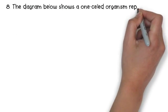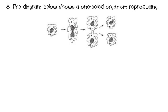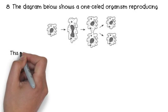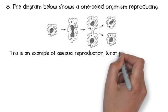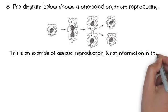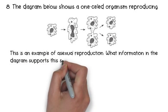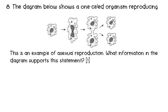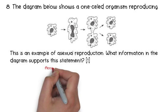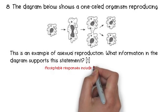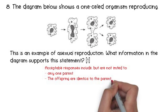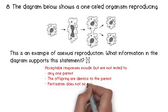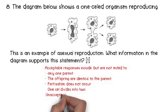Number 8: The diagram below shows a one-celled organism reproducing. This is an example of asexual reproduction. What information in the diagram supports this statement? Pause and play when you're ready. Acceptable responses include but are not limited to: only one parent is shown; the offspring are identical to the parent; fertilization does not occur; one cell divides into two.